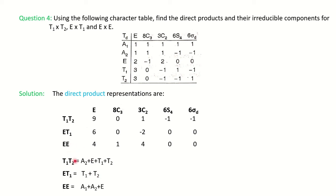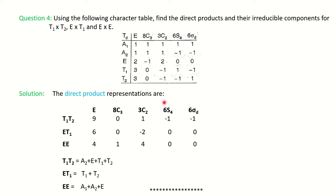For E × E, we have A1 + A2 + E: 1+1+2=4, then 0 and 0 — giving the correct list. No other combination works. So the direct product gives the reducible representation and then you find which irreducible representations are present. First multiply for the direct product, then add to find the irreducible components. This topic is very important for MSc and competitive exams. All the best for your exam — see you in the next video.